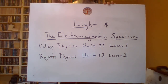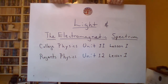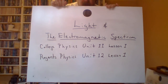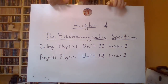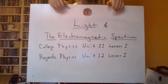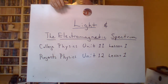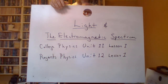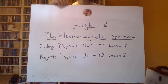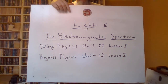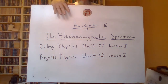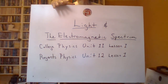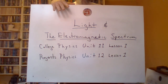Hello again, it's your friendly heavy physics teacher. Hi. We're here with a new lesson for my college physics and regents physics students. This is the first lesson of the new unit — for college physics, this is going to be unit 11. And we're going to be talking about light as a wave.